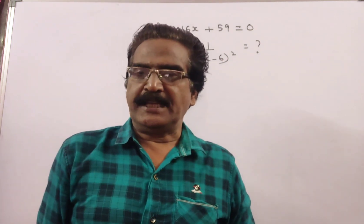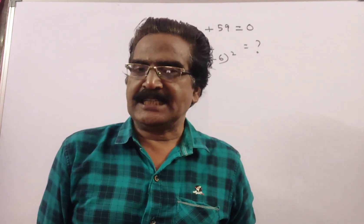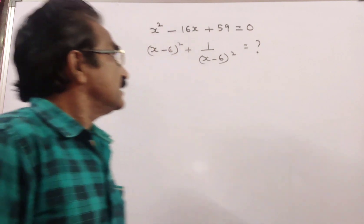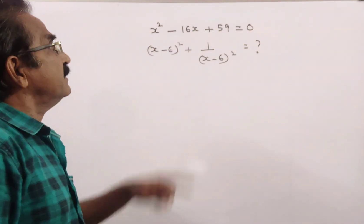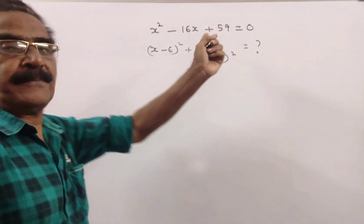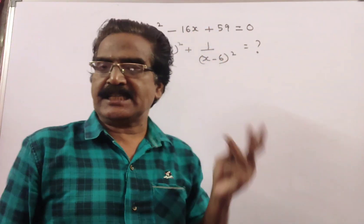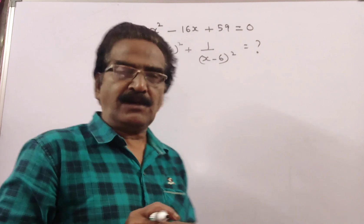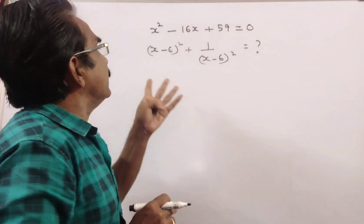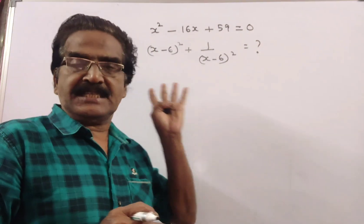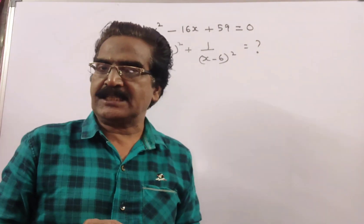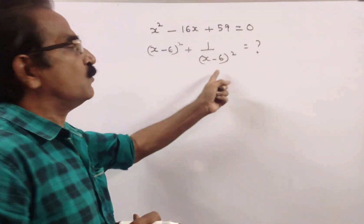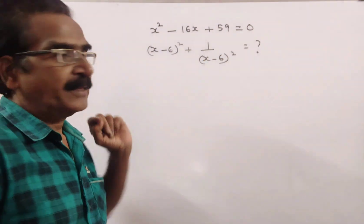Hi friends, good morning. Please look at the next problem in algebra. x squared minus 16x plus 59 is equal to 0. Then, what is the value of (x minus 6)² plus 1 by (x minus 6)²?